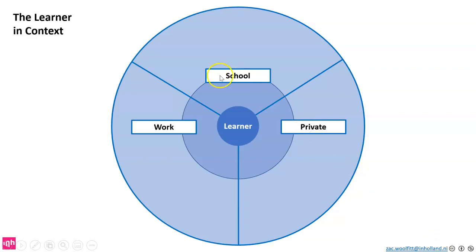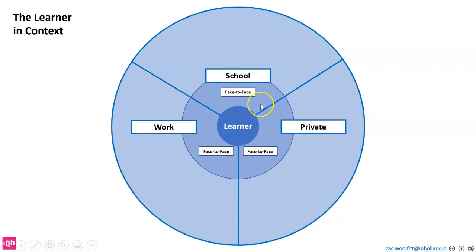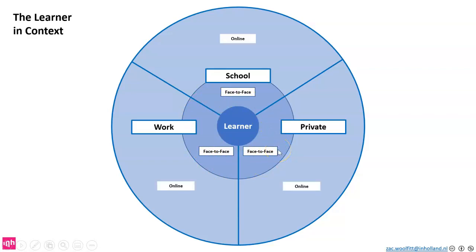Now in the middle I'm going to make another division here in the learning landscape, and this is to do with face-to-face. Everything that happens in this blue section in the center is face-to-face — that means you're physically in the same space as the person you're learning with. The next level is online; here you can see this outer circle is online, showing the different interactions.